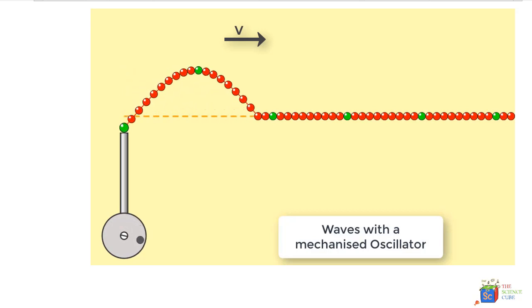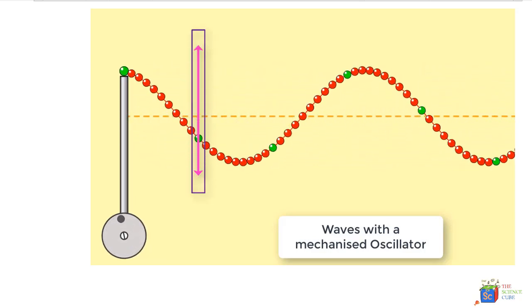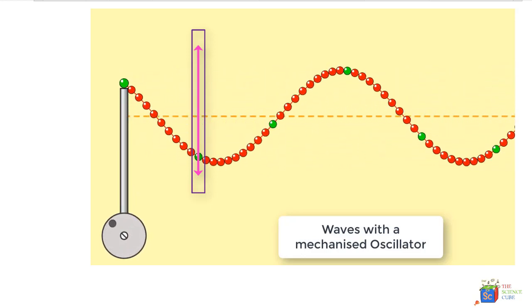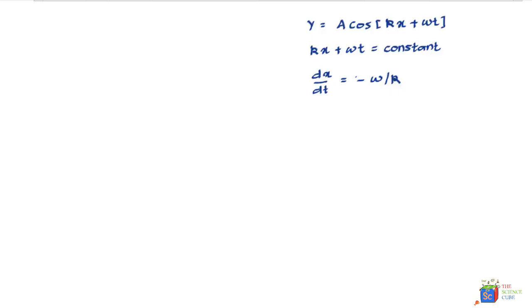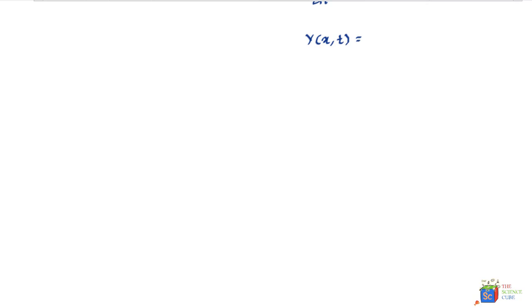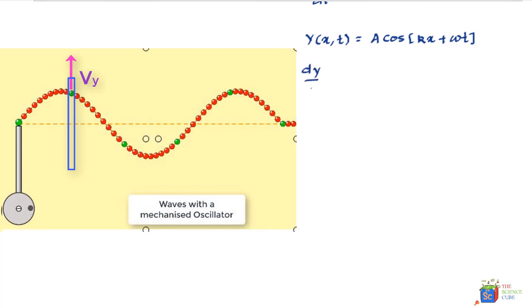Now let's find the speed of a particle on the wave in the y direction — the velocity perpendicular to the wave's motion. We know that the displacement of a particle is given by y(x, t) = A cos(kx + ωt). We can find the transverse velocity the straightforward way by computing dy/dt.